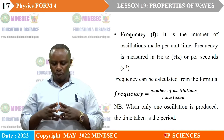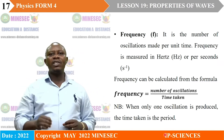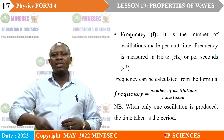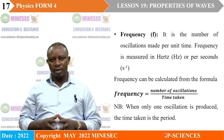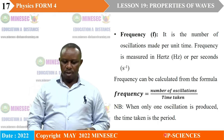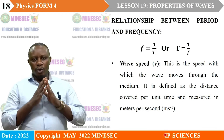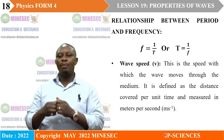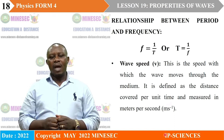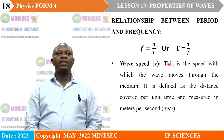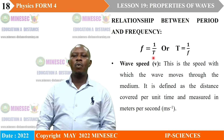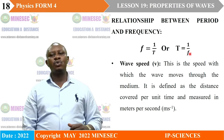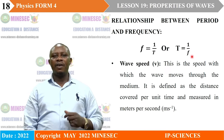When only one oscillation is produced, the time taken to make that one oscillation is called the period. There exists a relationship between frequency and period: frequency equals one over period, or the period of a wave is equal to the inverse of the frequency.